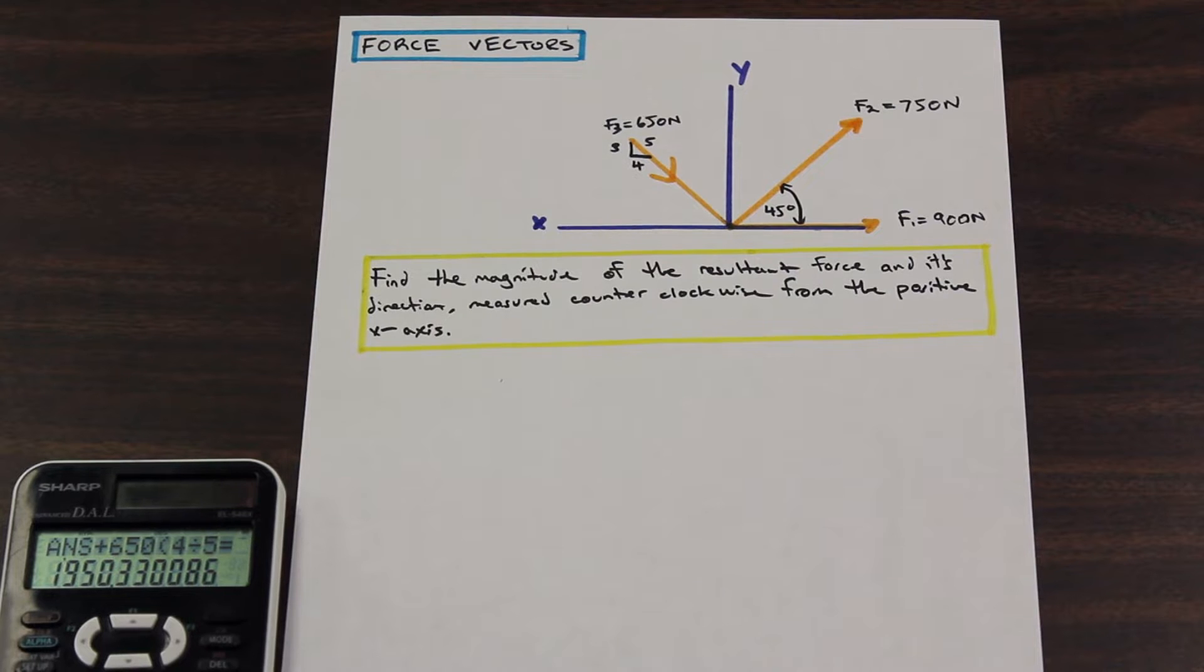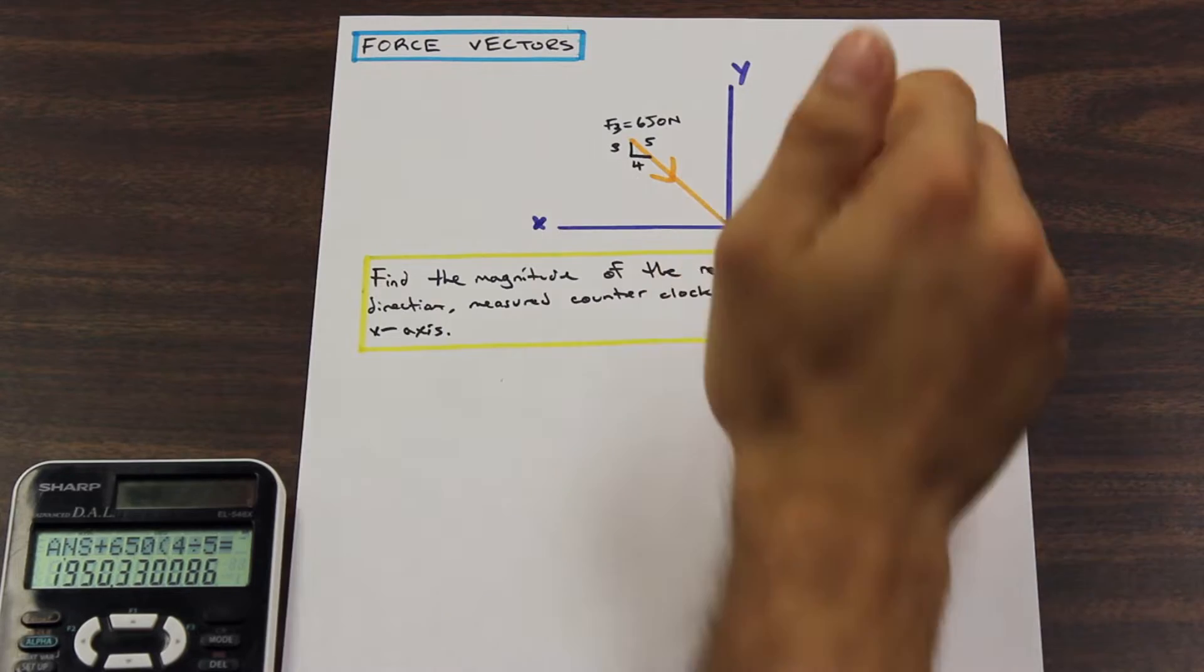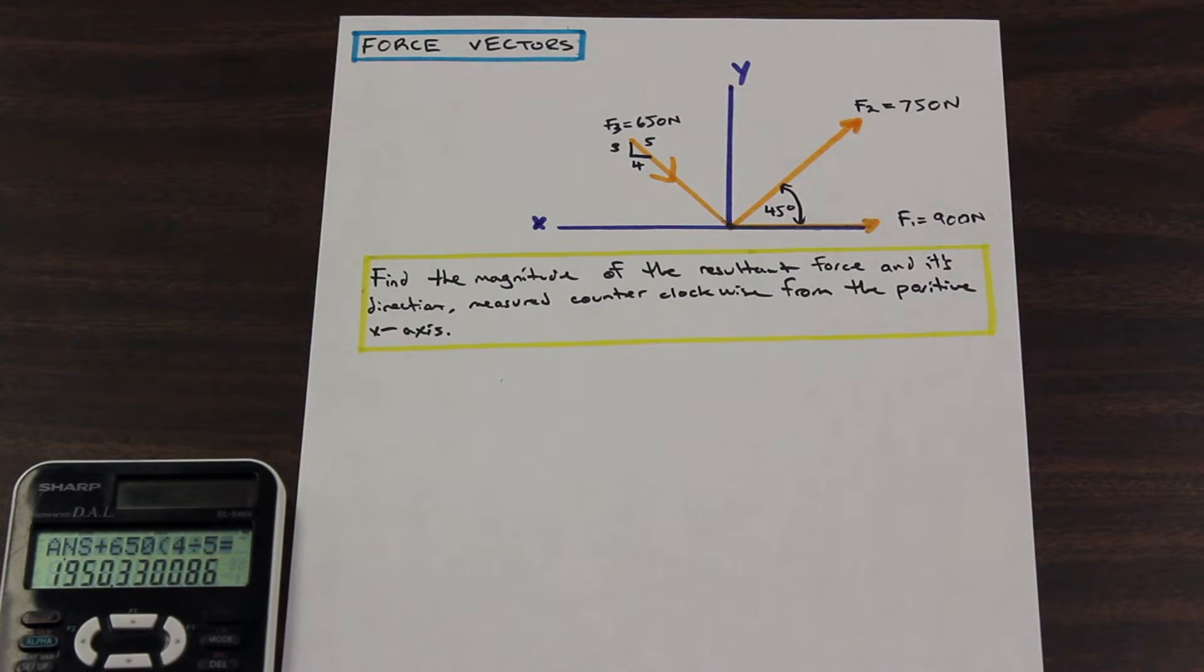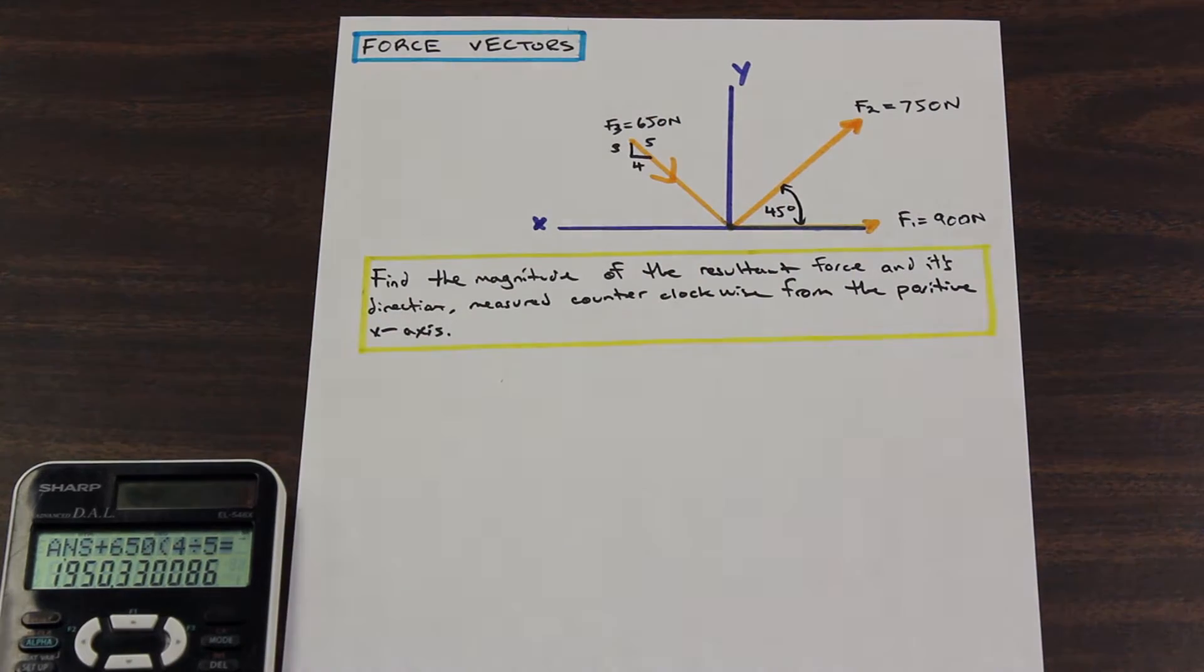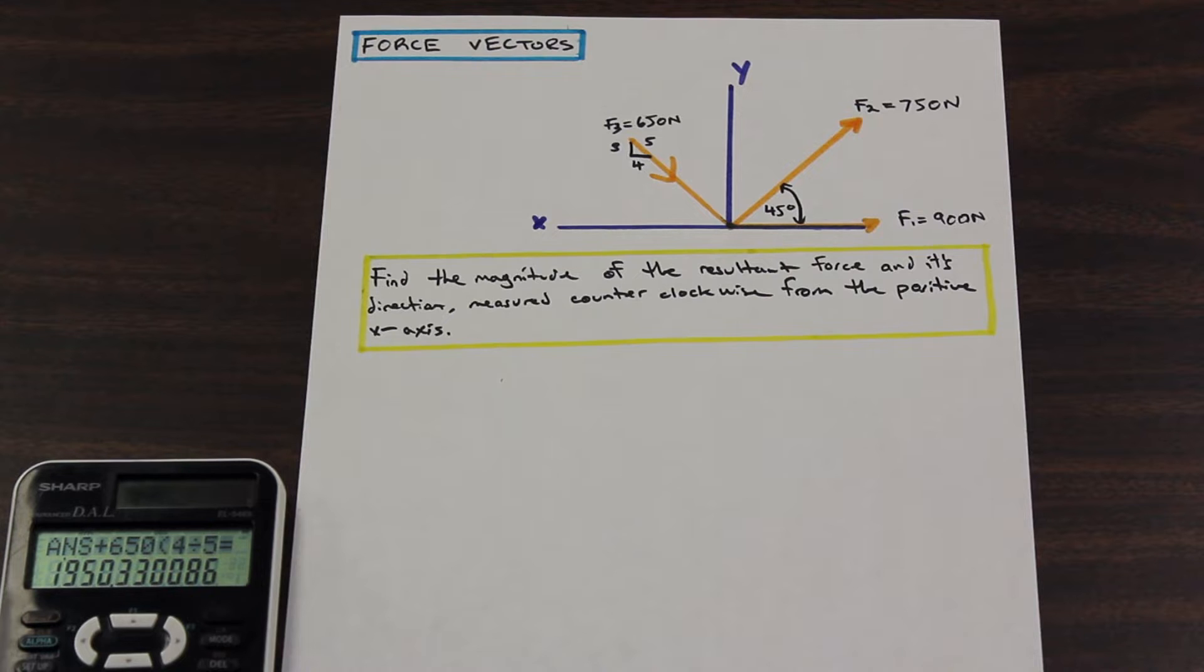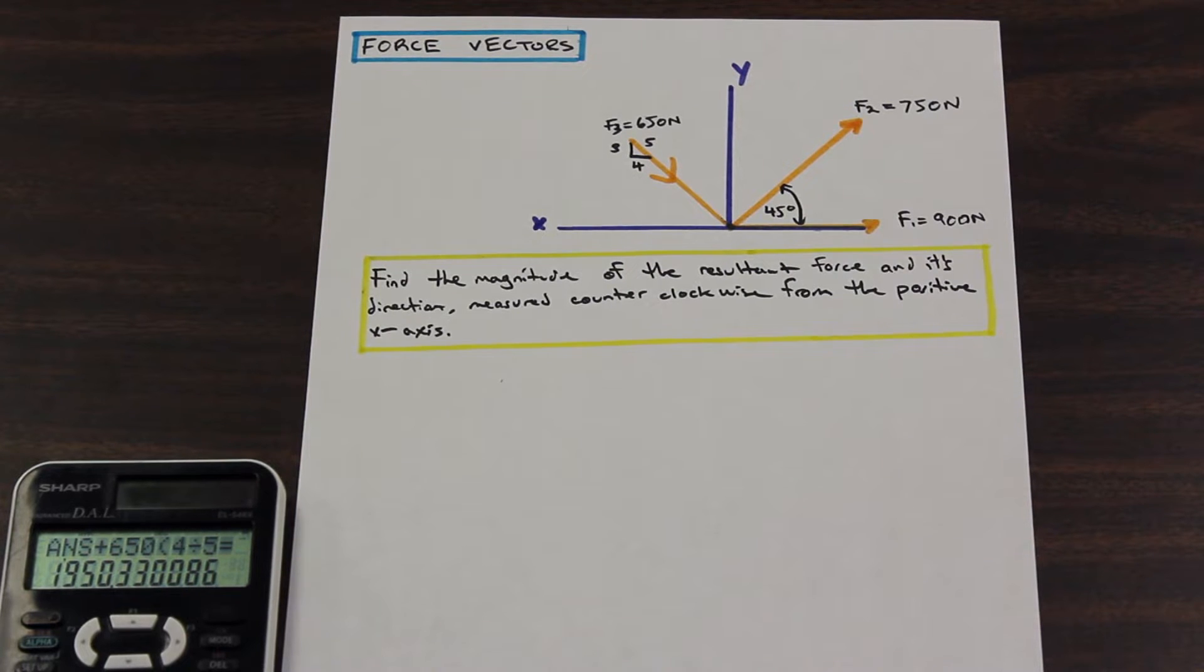The question asks: find the magnitude of the resultant force and its direction measured counterclockwise from the positive x-axis. So what do we do here? We have a diagram with three forces. We have the directions of the forces, and for one of the forces, F3, we're given a 3-4-5 triangle to use instead of an angle. We're going to show you how to use that instead of calculating the angle, which can be unnecessary and can lead to small rounding errors.